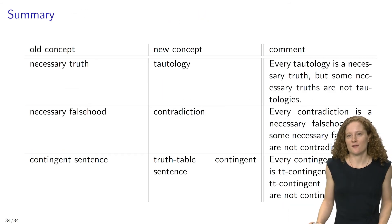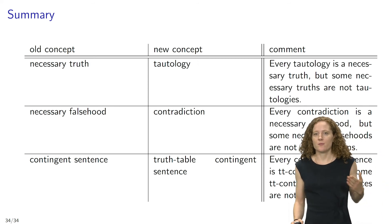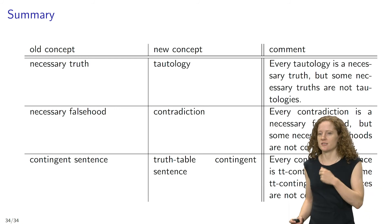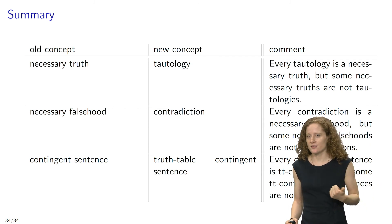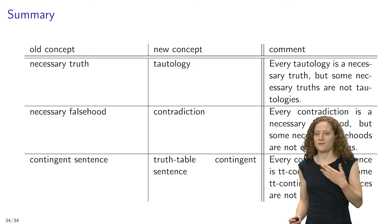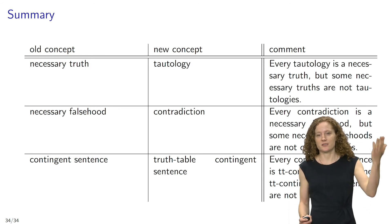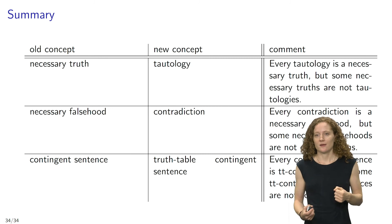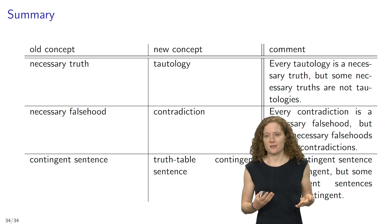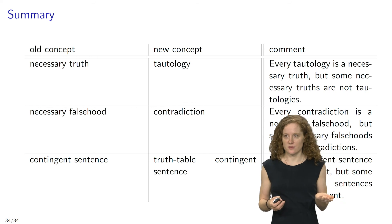Let's sum up what we have learned. In our first lecture, we encountered three important logical concepts: necessary truths, necessary falsehoods, and contingent sentences. Necessary truths are true in all hypothetical scenarios. Necessary falsehoods are false in all hypothetical scenarios. And contingent sentences are true in some, but not in all hypothetical scenarios. In this lecture, we introduced three new semantic concepts: the concept of a tautology, of a contradiction, and of a truth table contingent sentence.